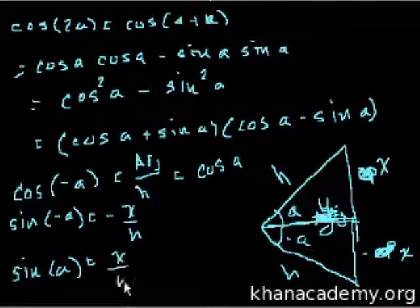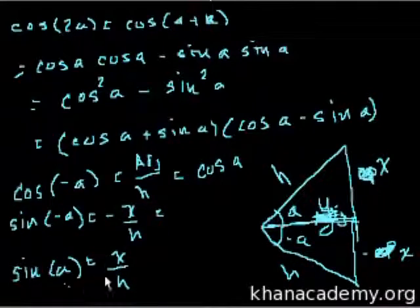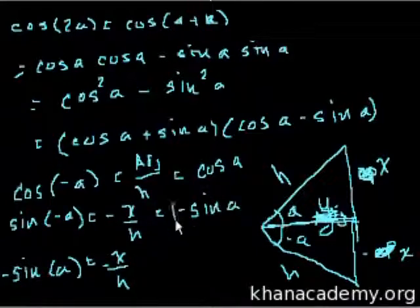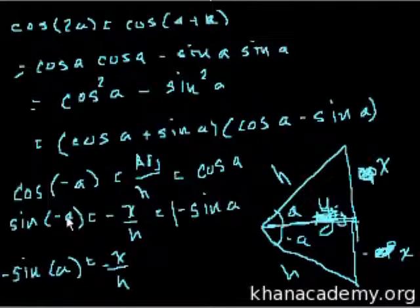And sine of a - sine of a is x over h. x over h. So negative of that is negative a, negative sine of a. Sine of a is x over h, so sine of negative a equals negative sine of a. Sine is an odd function.